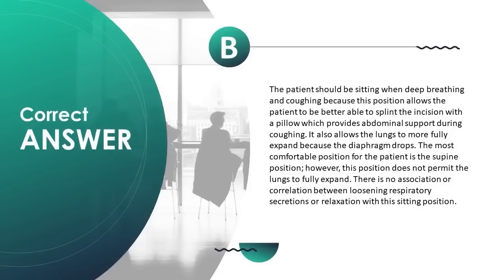The sitting position also allows the lungs to more fully expand because the diaphragm drops. The most comfortable position is the supine position; however, this does not permit the lungs to fully expand. There is no association between loosening respiratory secretions or relaxation with the sitting position.